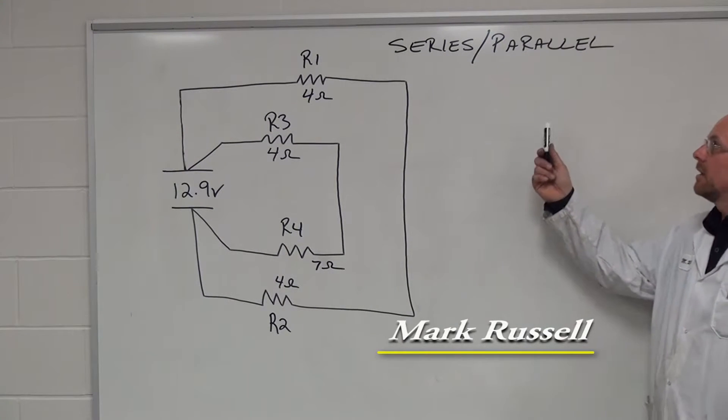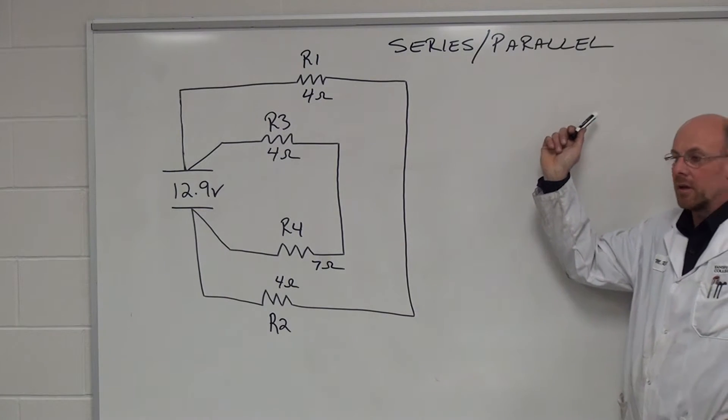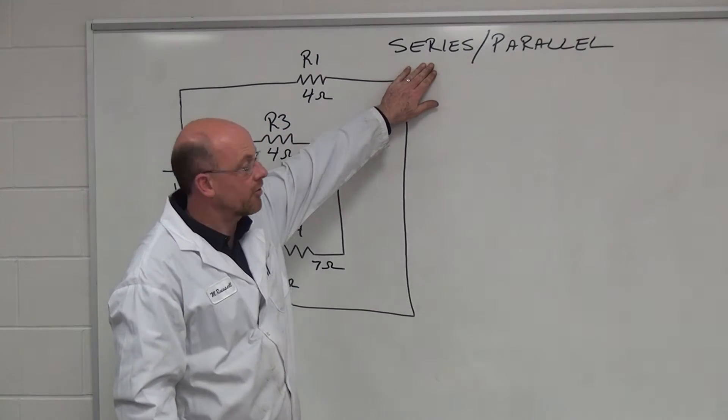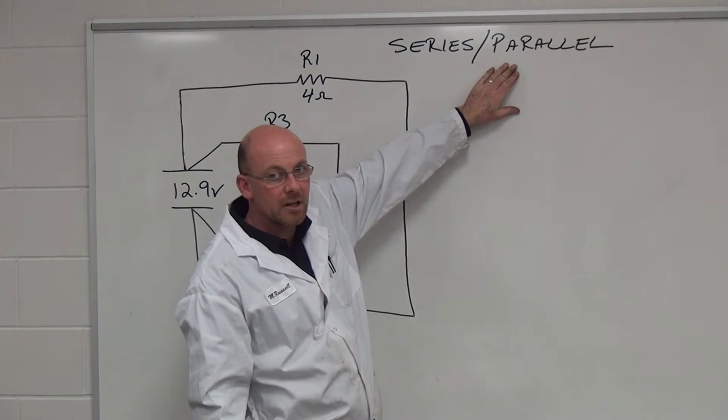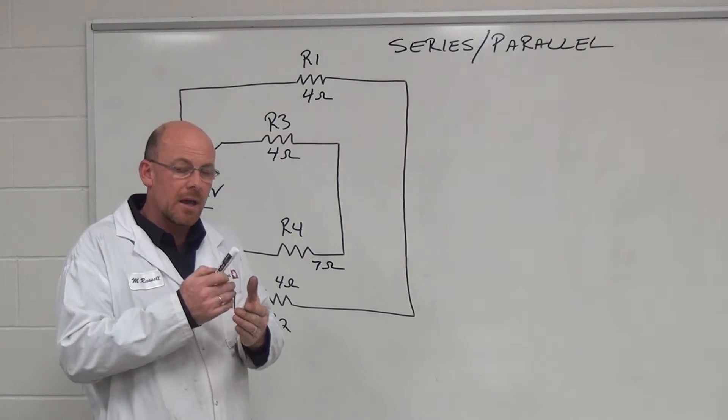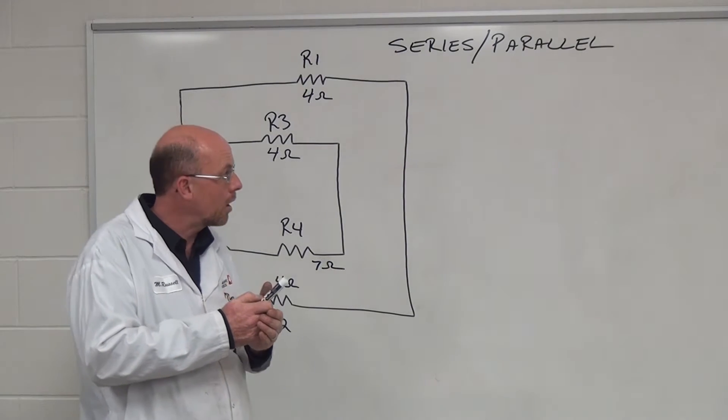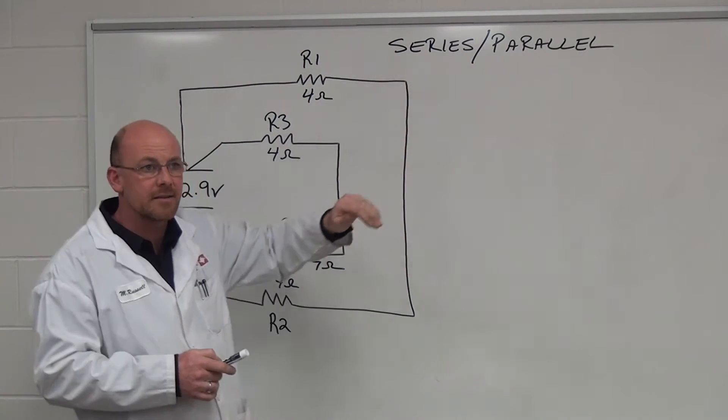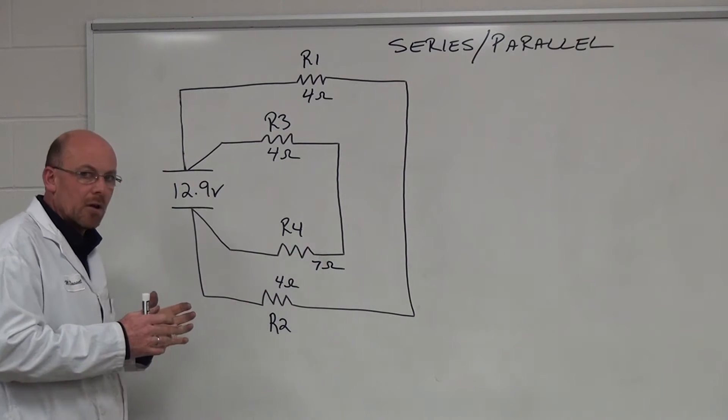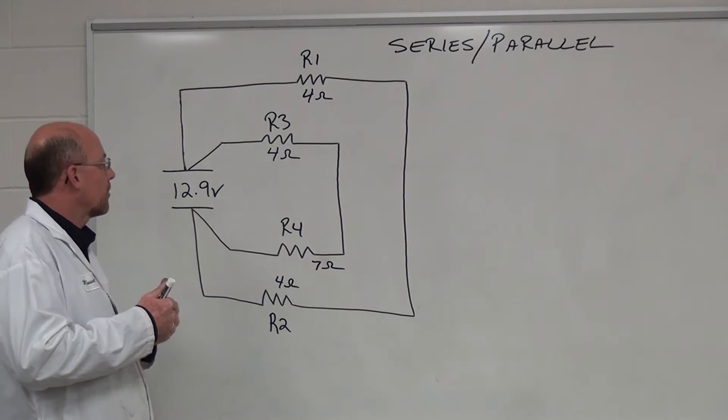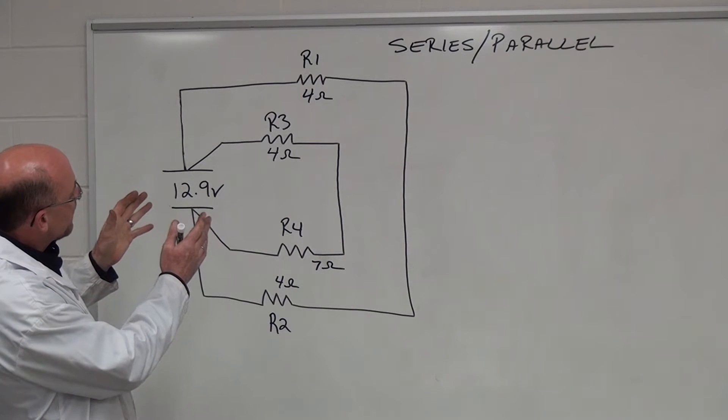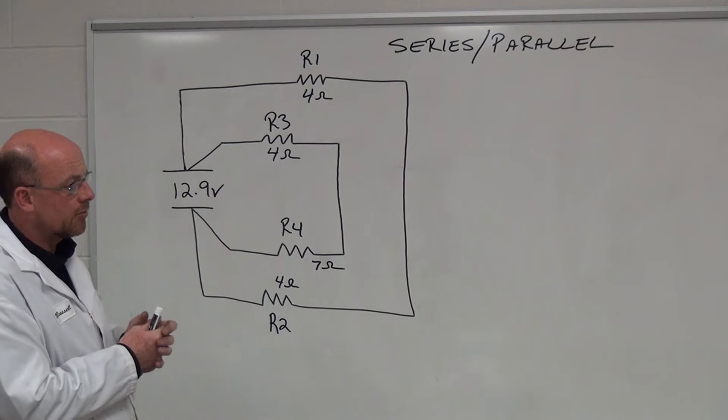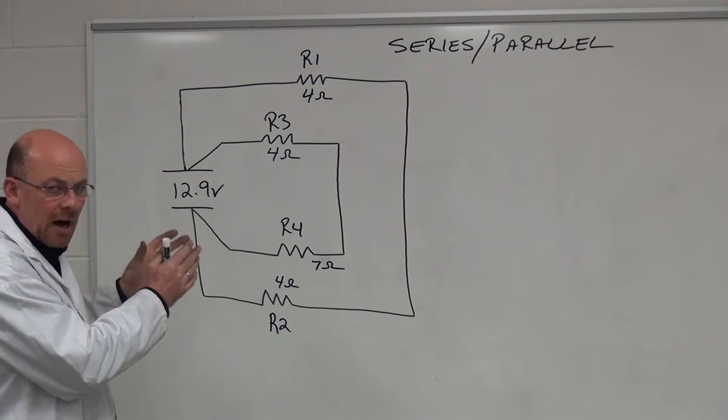Okay, next one we're going to take a look at is a series-parallel circuit. We've already looked at a series circuit and some of the characteristics, and a parallel circuit using the one over formula and the product over sum formula. Now we're going to take a look at the two combined together. First of all, to make it easy for technicians to absorb this, we have to determine what we actually have here. Saying it's a series-parallel is one thing, but actually defining it is different.